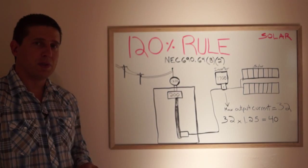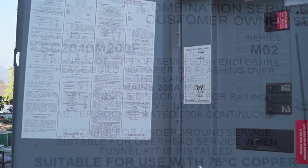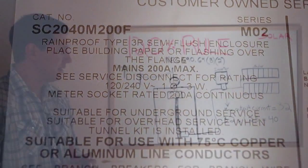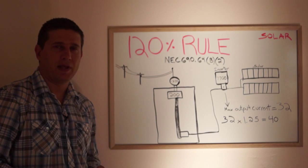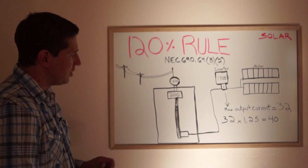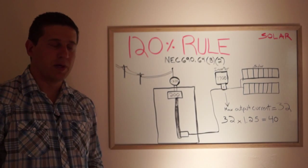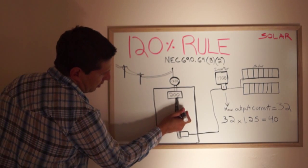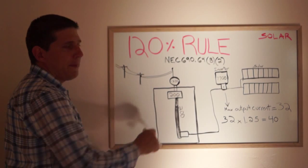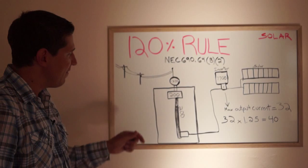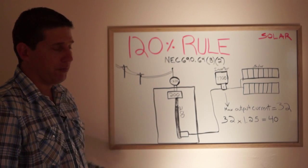Usually the label will state the bus bar rating which I encourage anyone looking into further understanding this to look at a couple electric panels and find the bus bar rating. Now assuming that this bus bar rating is 200 as well, meaning that bus bar wasn't designed to have more than 200 amps feeding through it.